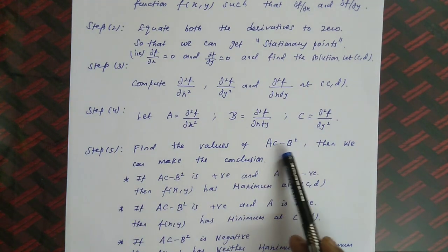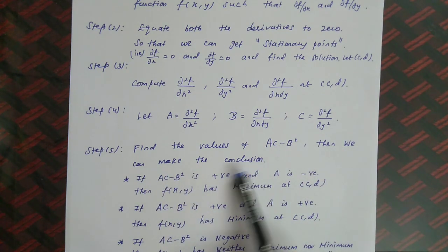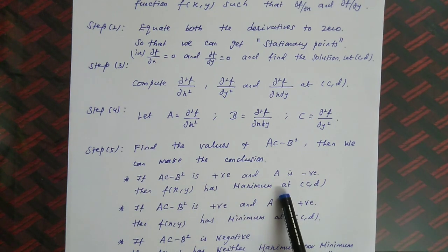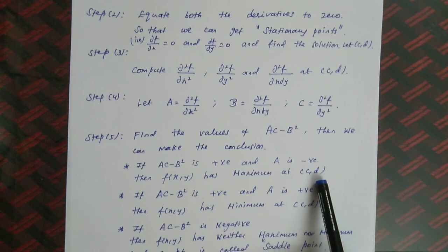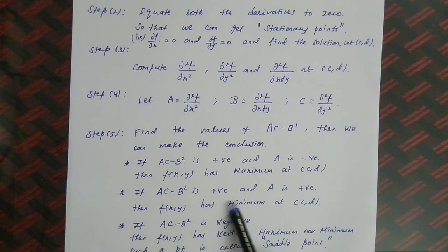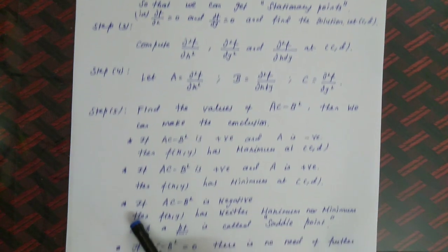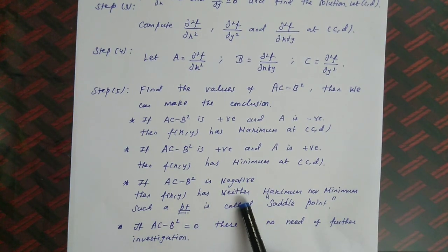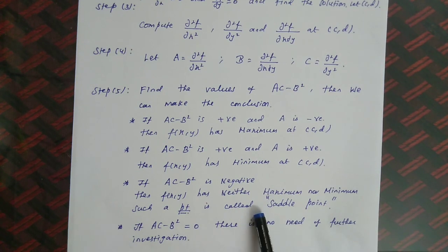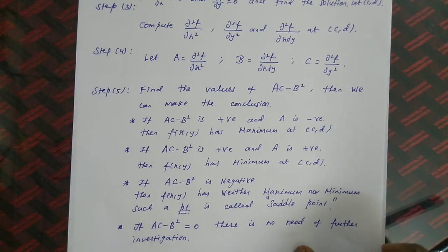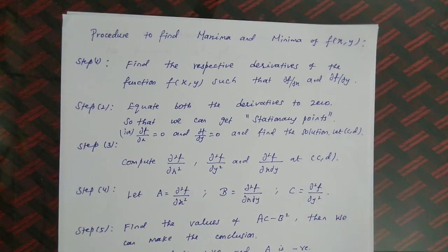Step 5: Find the value of AC − B². If AC − B² is positive and A is negative, then f(x, y) has a maximum at (c, d). If AC − B² is positive and A is also positive, then f(x, y) has a minimum at (c, d). If AC − B² is negative, f has neither maximum nor minimum — such a point is called a saddle point. If AC − B² equals 0, there is no need for further investigation.